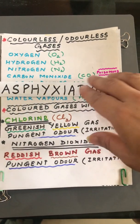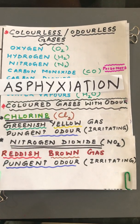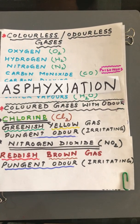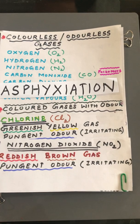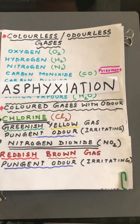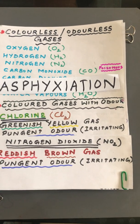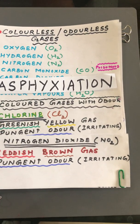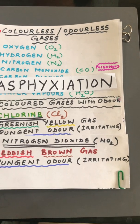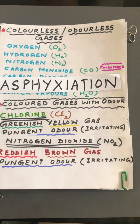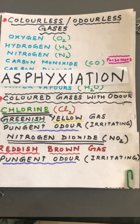Asphyxiation means suffocation. Carbon monoxide is generally released when hydrocarbons undergo incomplete combustion. If you burn petrol, diesel, or coal in an insufficient supply of oxygen, it forms carbon monoxide. For example, if you are burning a coal fire inside a room with all doors and windows closed, the supply of oxygen is less, so carbon monoxide will be released. You will not detect this gas because it is colorless as well as odorless, ultimately causing asphyxiation — suffocation.